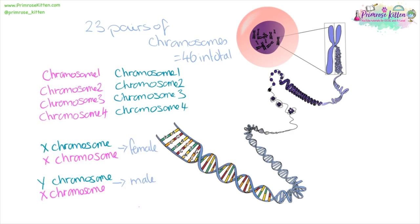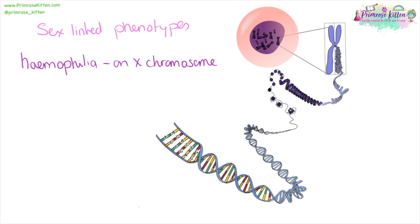If you have inherited two X chromosomes, you're going to be genetically female. If you have inherited an X and a Y chromosome, you're going to be genetically male. There are some traits which are sex-linked. For example, haemophilia — the gene that causes haemophilia is on the X chromosome. Whereas females have two X chromosomes and are more likely to have a dominant and a recessive gene, if a male inherits the recessive gene for haemophilia, they have no corresponding dominant gene because they only have one X chromosome.